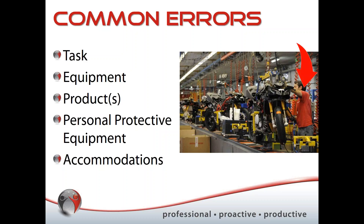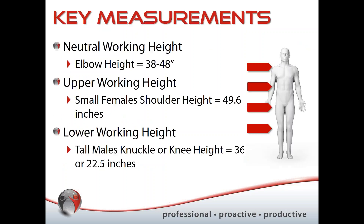When looking at key measurements, you don't need to remember every measurement known to man. There are key ones to focus on. First, neutral working height: elbow height becomes the sun of our ergonomic solar system. For standing, we have it between 38 and 48 inches — that's a 10-inch range of height accommodation needed for adjustability. This is why sit-stand workstations are so popular.